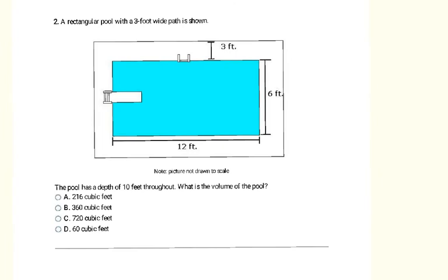This problem says a rectangular pool with a 3 foot wide path is shown. And it gives us this diagram. The pool has a depth of 10 feet throughout. What is the volume of the pool? So you're going to need to know that volume is equal to length times width times height. So here the volume is going to equal the length of the pool is 12, and then the width of the pool is 6, times 6. And then the height, that's going to be how tall is the pool or how deep is the pool. It tells us that in the problem is 10. This 3 here is extra information. They're trying to give that to you to throw you off.